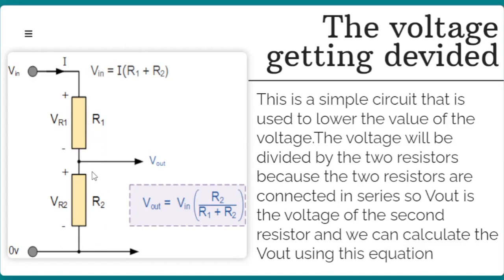When resistors are connected in series, the voltage is divided by the two resistors. For example, if we want to place a voltage of 10 volts and we want 5 volts — we want to drop the value of the voltage to half, or any value that we need. So we have V_in, voltage in, and V_out, voltage out. V_in is going to be 10 volts.